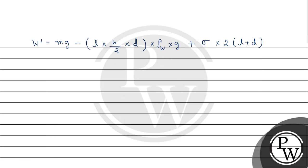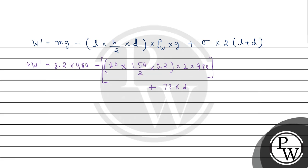Substituting the values: W dash equals 8.2 gram times 980 cm/s² minus 10 times 1.54 divided by 2 times 0.2 times 1 g/cm³ times 980 cm/s², plus 73.5 dyne/cm times 2 times (10 plus 0.2).